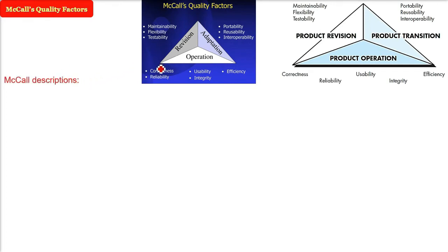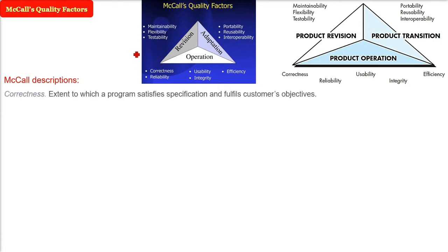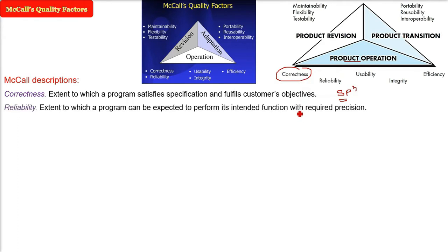What are these factors and why are they important? For example, in product operation, let us start with correctness. Correctness is the extent to which a program satisfies the specification and fulfills the customer's objective — the degree to which the software conforms to the defined specification. Reliability is the extent to which a program can be expected to perform its intended function with required precision.